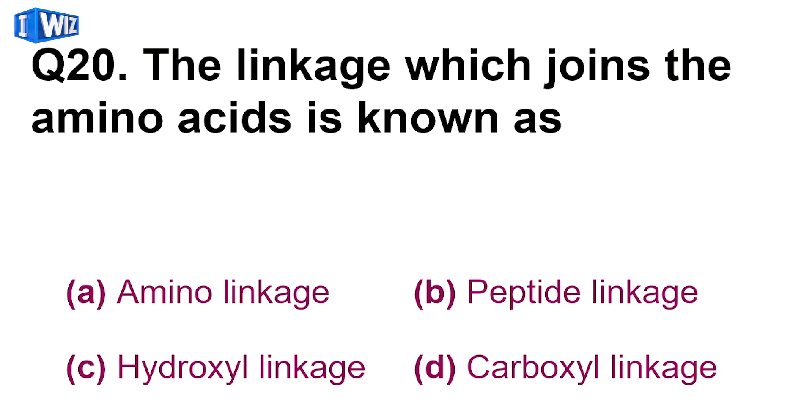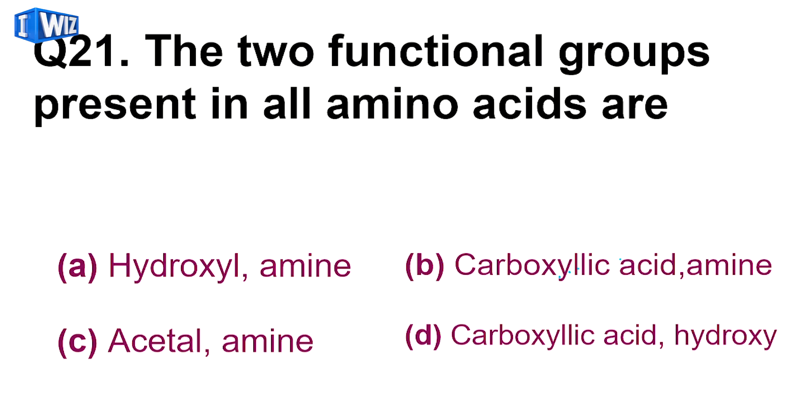Next is, the linkage which joins the amino acids is known as - amino acid jib aapas mein miltate hai, toh joh C-O-N-H linkage banti hai, us tarha ki linkage ko kaha jata hai peptide bond ya peptide linkage.